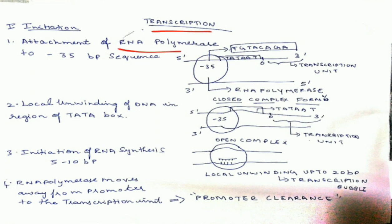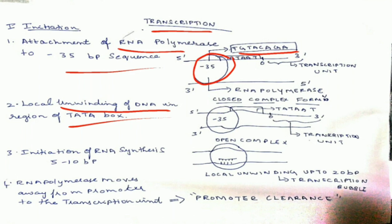In prokaryotic transcription initiation, first the RNA polymerase binds to the minus-35 base pair sequence. It then causes unwinding of DNA at the TATA box region. You can see in the picture that the RNA polymerase is binding to the minus-35 upstream region, and then the DNA is getting unwound at the TATA box.